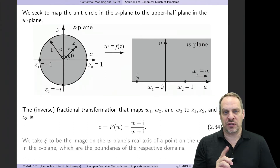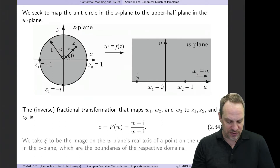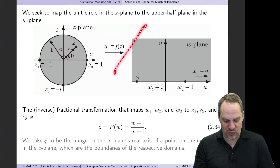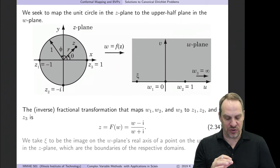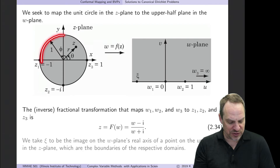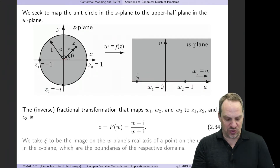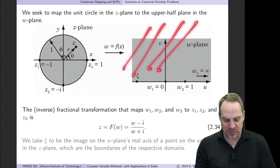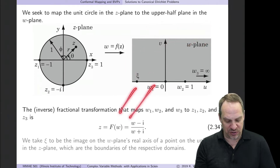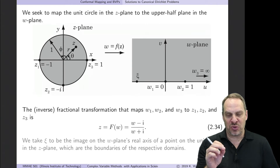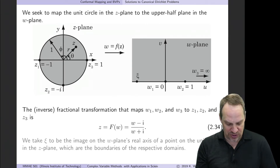One thing that's always good to do — and I mention this at the very end of the video as well — is be sure that the interior of the domain does map to where you expect it to. All I can ensure with this fractional transformation is that points on the boundary get mapped to points on the boundary. So take a point, for example at the origin, and check where that maps to in the w-plane, confirming it maps to the upper half plane and not the lower half plane.